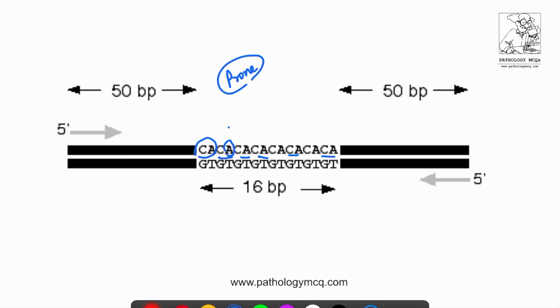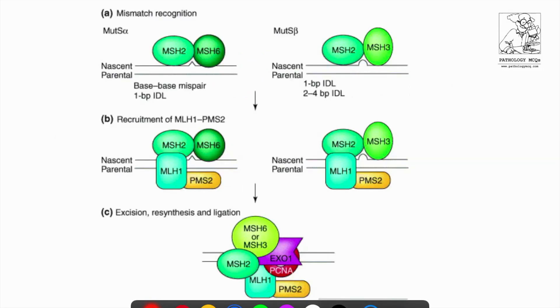When this happens, there are certain genes which come in to repair this base pair mismatch. These genes are known as the mismatch repair genes, also known as the MMR genes. What are these genes? These genes are MSH2, MLH1, PMS2, and MSH6.